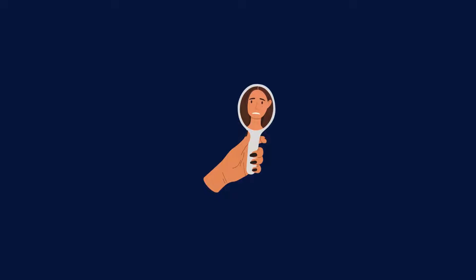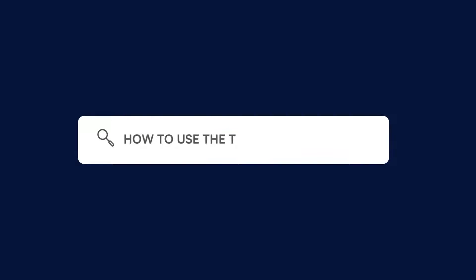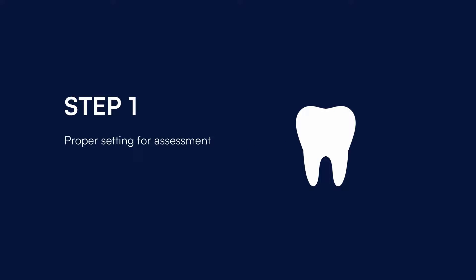To use our free teeth colour chart, follow these steps. Download the teeth colour chart from the CarePatron platform, which you can find in the link in the description. Position the shade guide or chart next to the teeth you wish to evaluate. Doing this under natural light is imperative, as artificial lighting can distort colours and lead to inaccuracies.